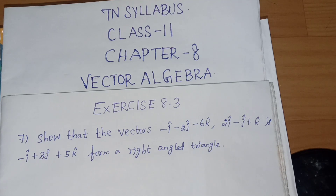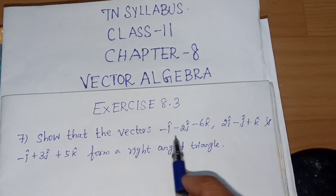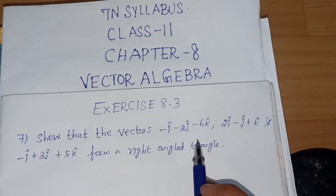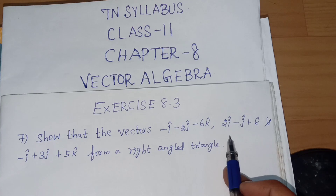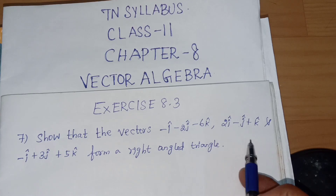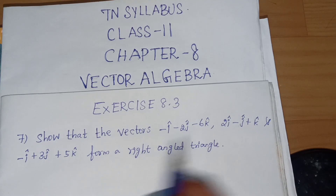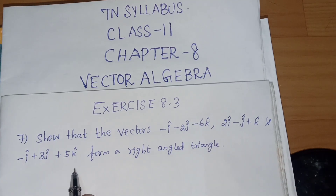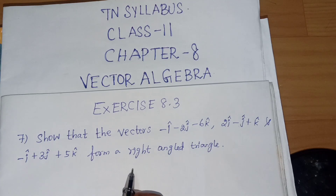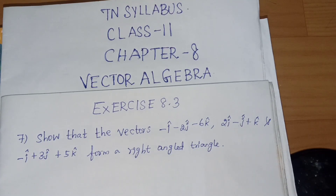Exercise 8.3, Question 7: Show that the vectors (-i - 2j - 6k), (2i - j + k), and (-i + 3j + 5k) form a right angle triangle.